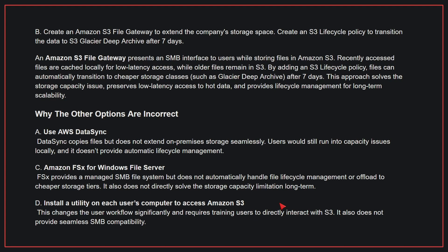Why the other options are incorrect: A — AWS DataSync copies files but does not extend on-premises storage seamlessly; users will still run into capacity issues locally, and it doesn't provide automatic lifecycle management. C — Amazon FSx for Windows File Server provides a managed SMB file system but does not automatically handle file lifecycle management or offload to cheaper storage tiers, and does not directly solve the storage capacity limitation long-term. D — Installing a utility on each user's computer to access Amazon S3 changes the user workflow significantly, requires training, and does not provide seamless SMB compatibility. Therefore, the correct answer is B.